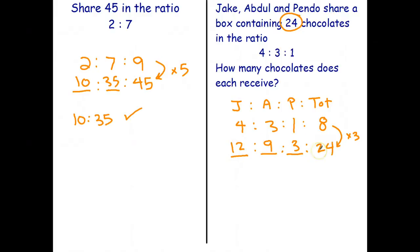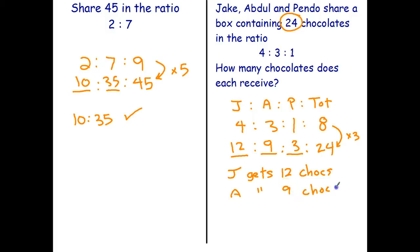Let's do a quick check: 12 plus 9 is 21, 21 plus 3 is 24. Therefore the answer is: Jake gets 12 chocolates, Abdul gets nine chocolates, and poor old Pendo only gets three chocolates. I don't know why this splitting is uneven, but that's the answer.